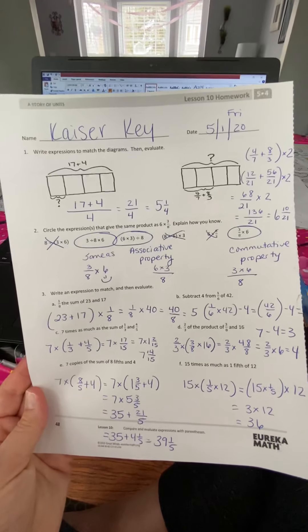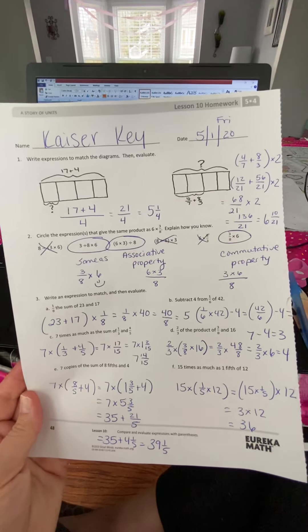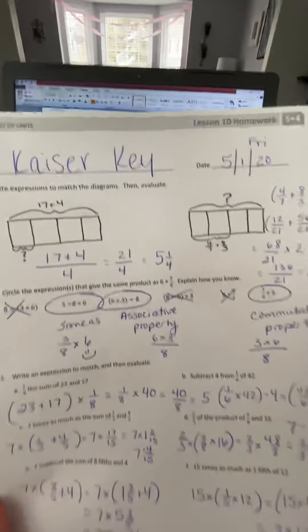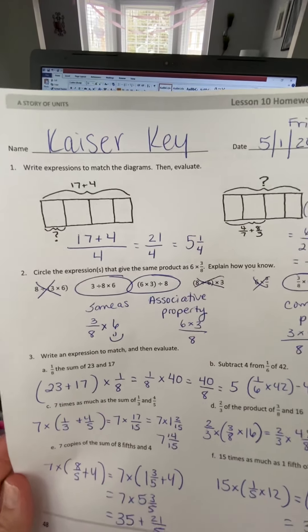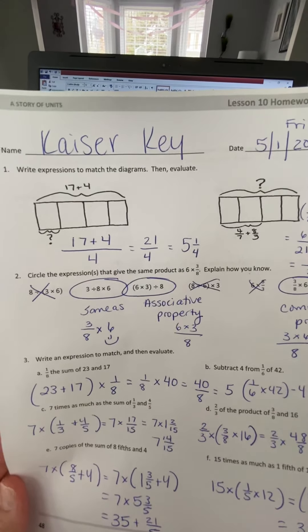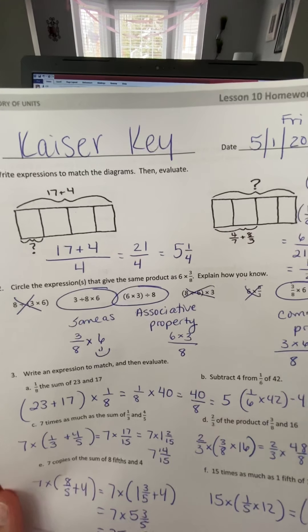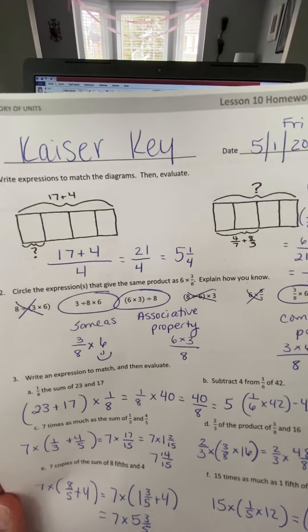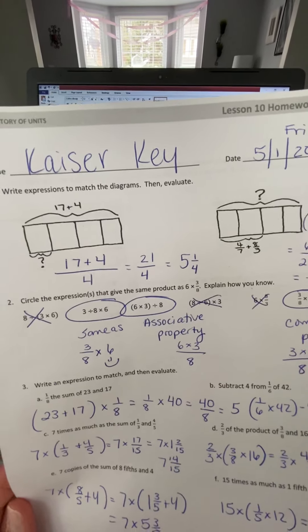Number one says to write expressions to match the diagrams, then evaluate. So if the diagram says 17 plus 4, go ahead and add 17 plus 4 and get 21. Then you divide 21 by 4, so each little piece will equal 5 and 1 fourth.